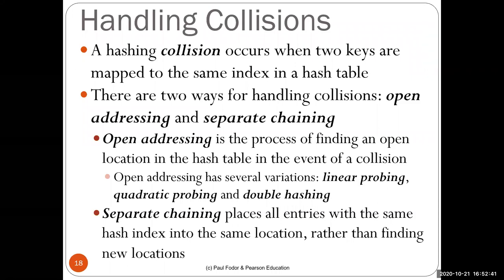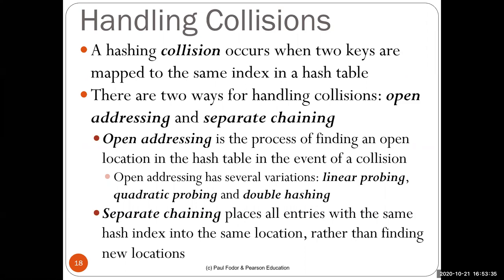Separate chaining means each table slot holds a reference to a linked list (or array list) of actual key-value pairs — a separate chain for every index. If there are many collisions, we pay the cost of iterating over that linked list to find an element, so it's no longer truly constant time.